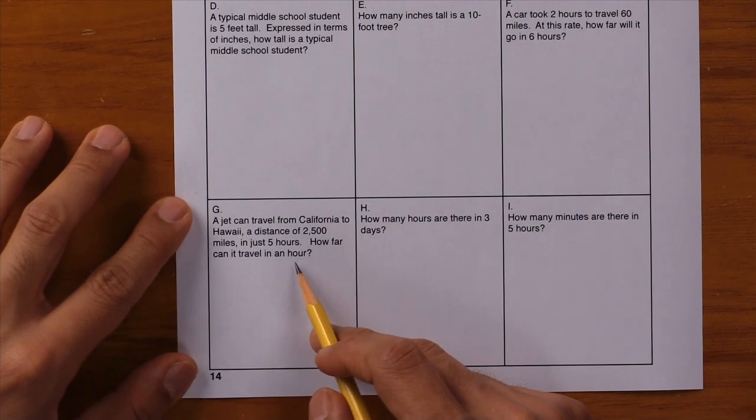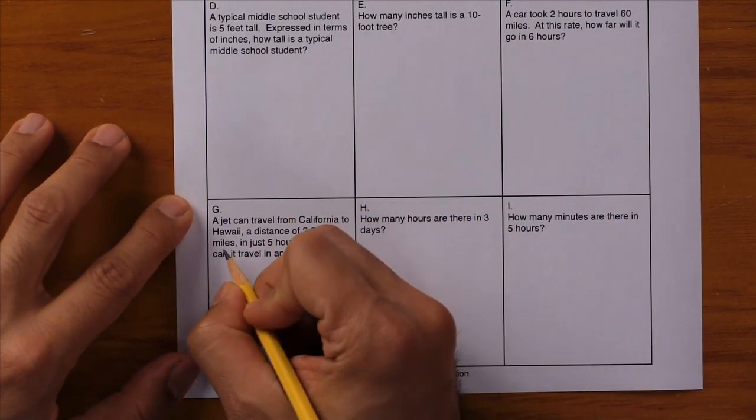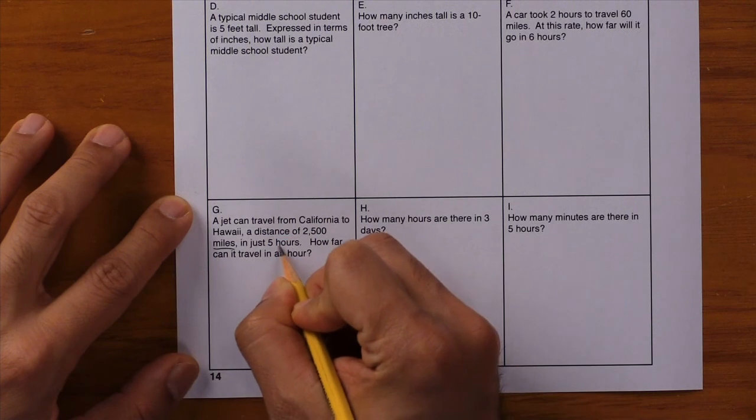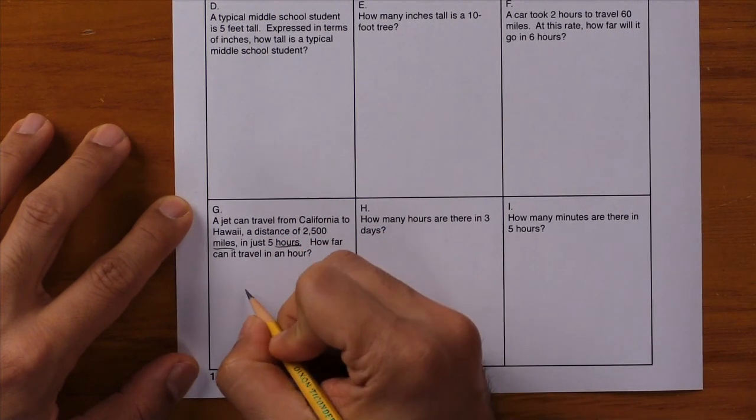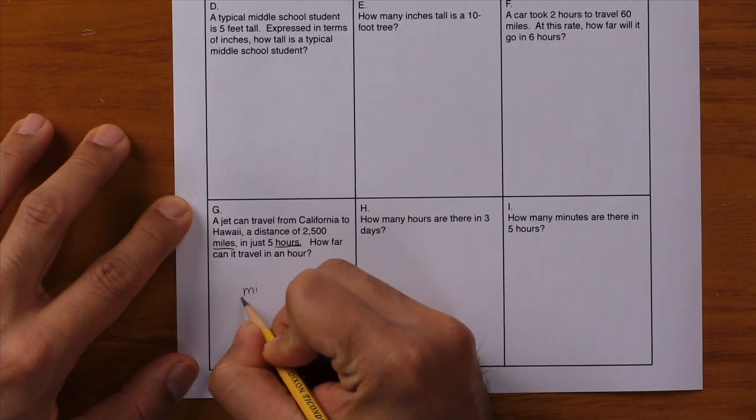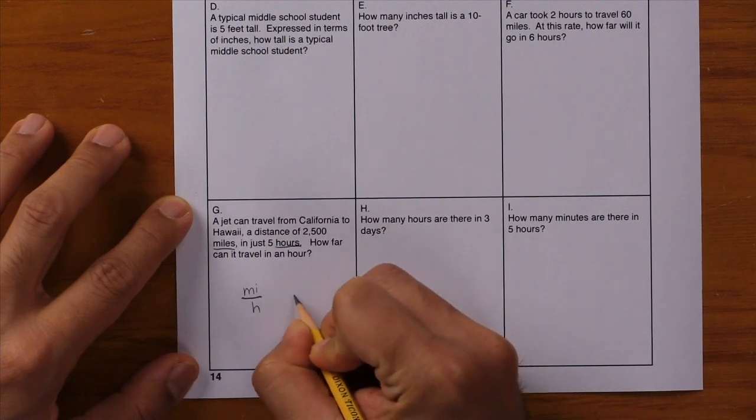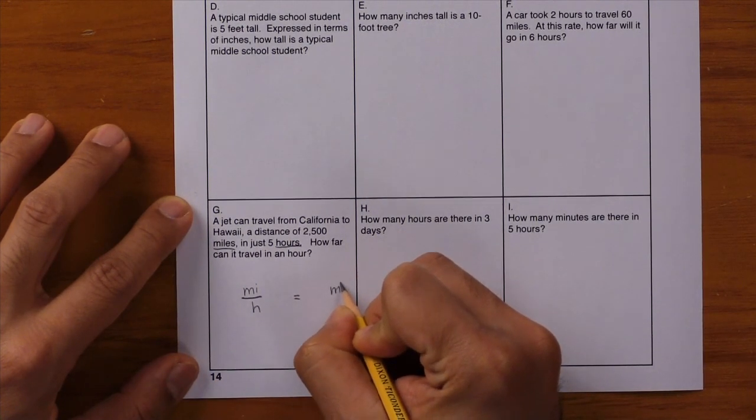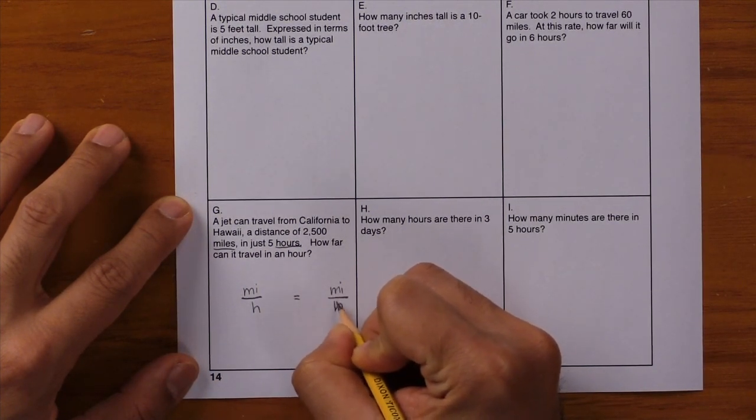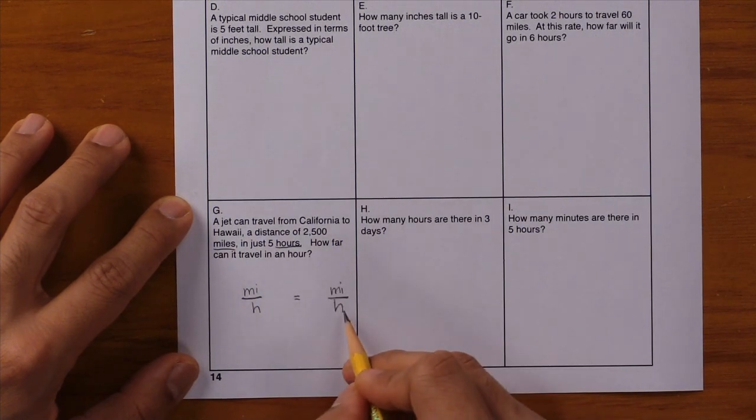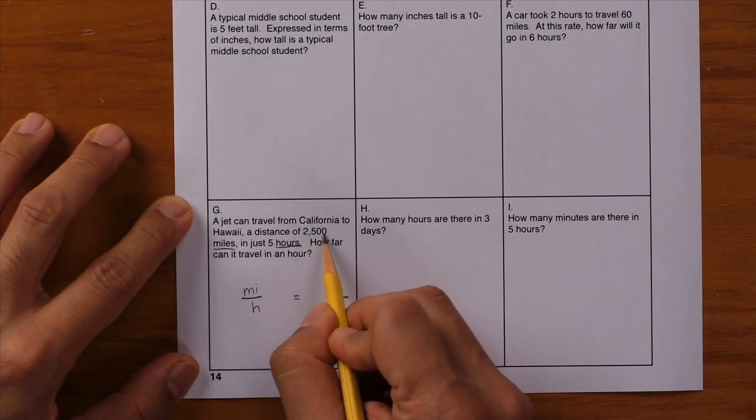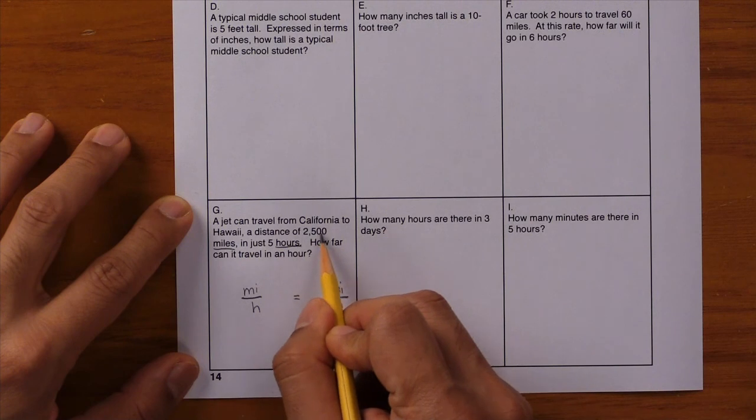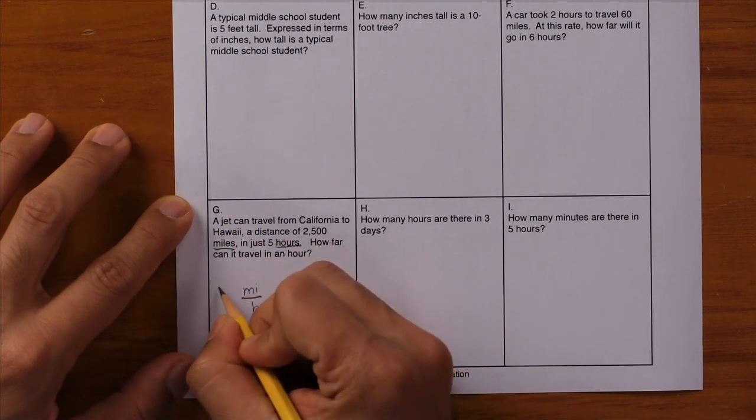And again we don't have A's and B's, but what we do have are miles and hours. So I'll write down miles per hour equals miles per hour. Now let's fill in the numbers. 2,500 miles. Where does 2,500 go? It goes right here with miles.